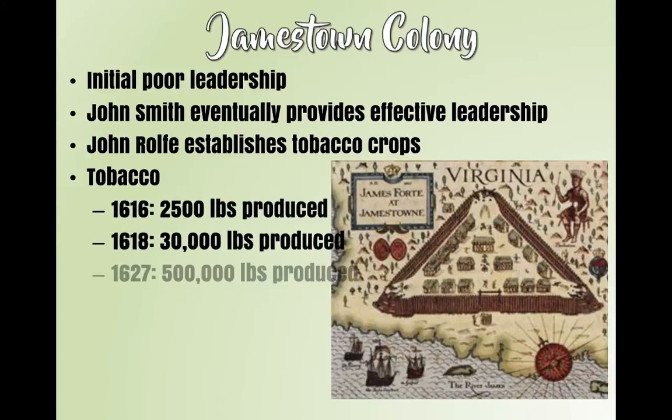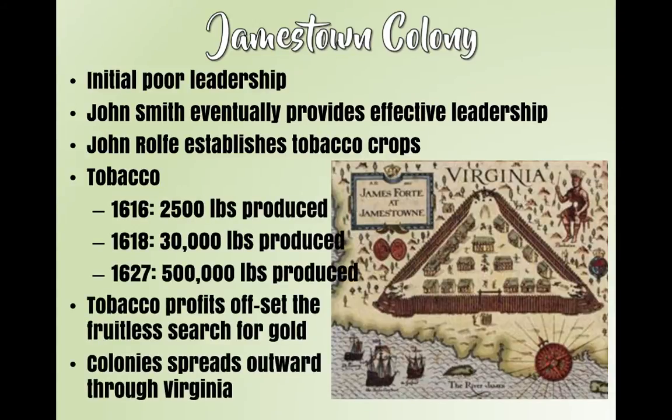These early settlers sometimes just crack me up. So the Jamestown Colony — remember there was really poor leadership. Eventually John Smith shows up and says, 'If you're not going to work, you're not going to eat.' And then we also got that other guy, John Rolfe. Why do they both have to be named John? It was a popular name. John Rolfe is the one who's going to bring tobacco seeds from the Caribbean that are going to grow really successfully in Virginia.